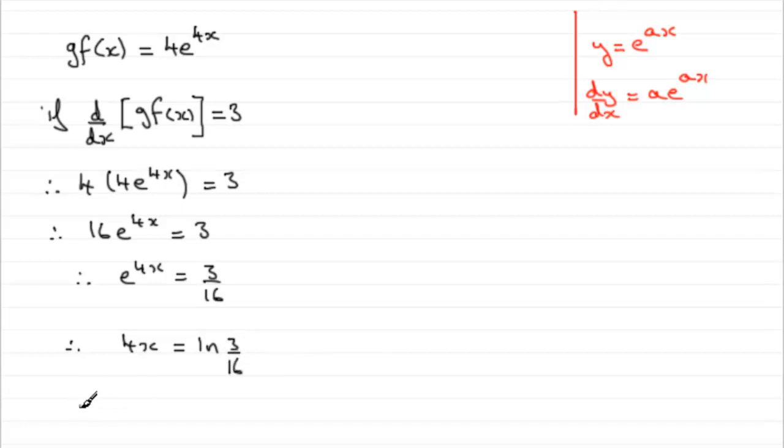And so to get x, all I need to do is times both sides by a quarter or divide by 4, same thing. So I'm going to write it as a quarter of the natural log of 3 over 16.